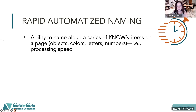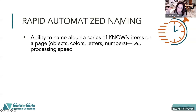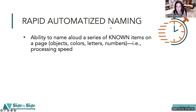Rapid automatized naming is the ability to name aloud known items — things that are already in your long-term memory. You have learned them, you have mastered them. The question is, how quickly can you recall it? How quickly can you bring that information to mind?